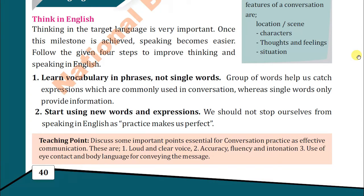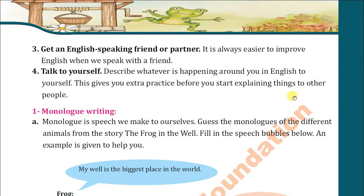We can commit mistakes — this is very common — but don't feel shy. Try to speak using whatever expressions, words, and phrases you have. Get an English-speaking friend or partner. Step three: talk to yourself. Describe whatever is happening around you in English to yourself. This gives you extra practice before you start explaining things to other people.